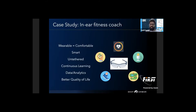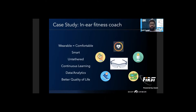Let's take a case study of an in-ear fitness device. This is a head-worn device mainly used for athletes to improve their athletic activities. It can be worn during running or cycling. It does a lot — by taking instructions it should be comfortable, smart enough to take user commands and respond back, and untethered because most users don't like wires dangling around them. It should have a feature like continuous learning to track the activities of the user and provide input based on those activities — overall improving the quality of life. Users also like to see their activities in pictorial representation.